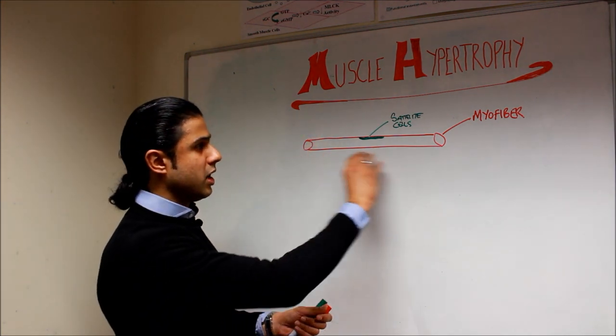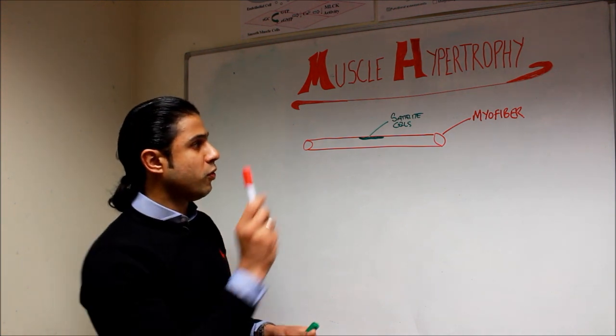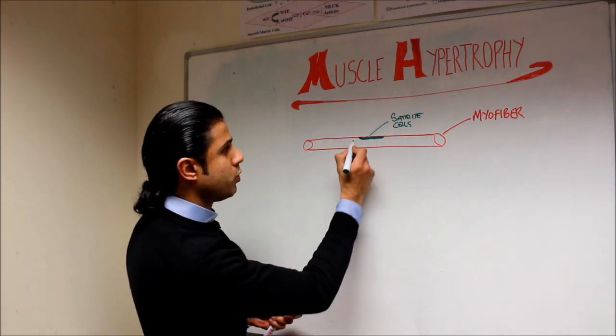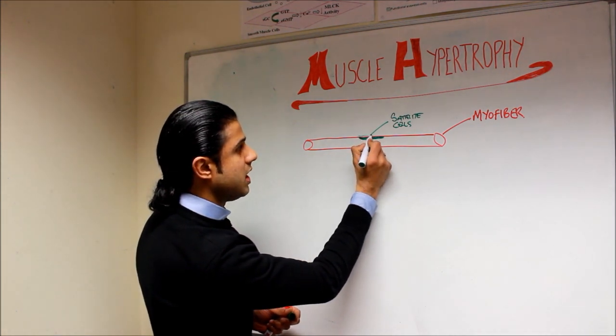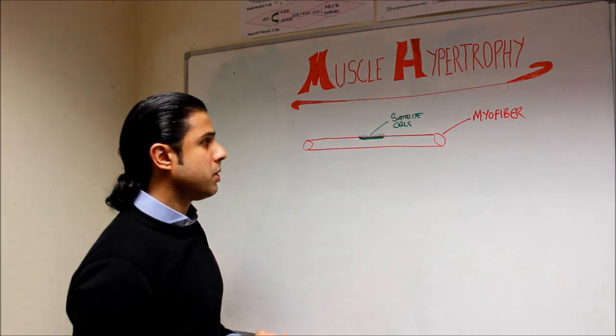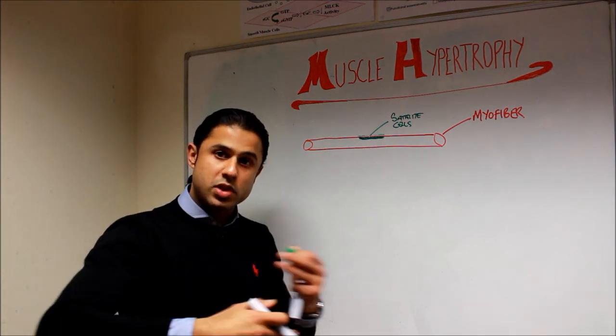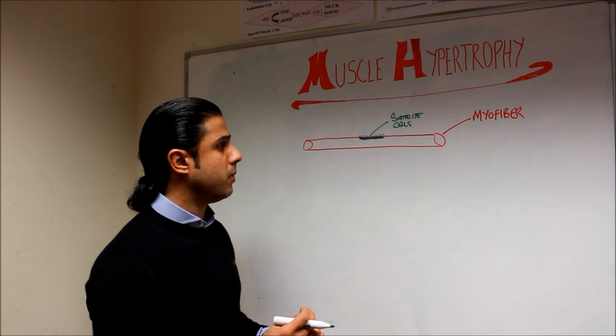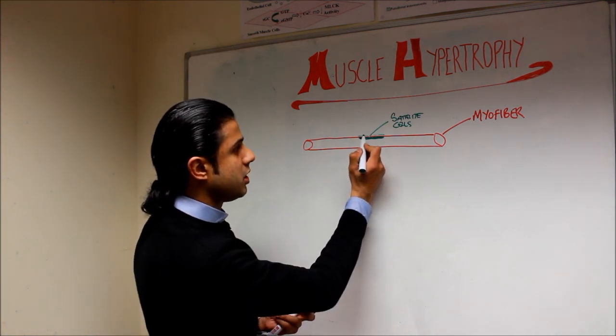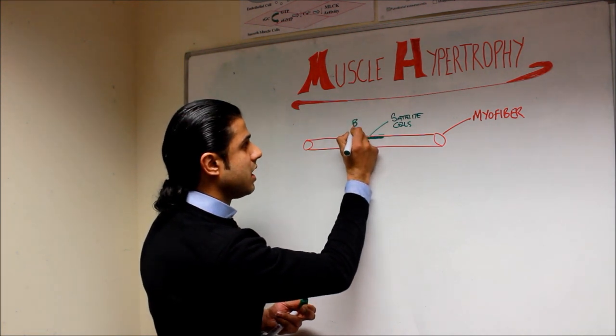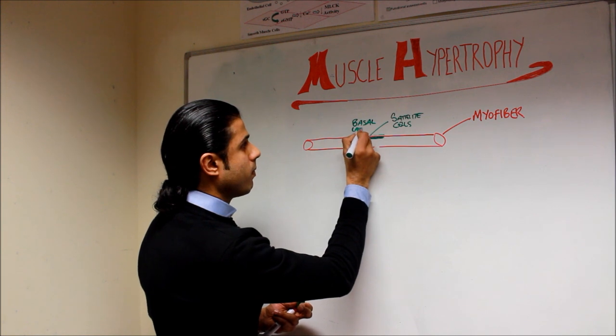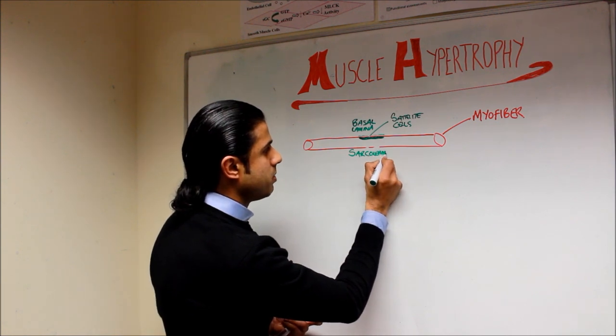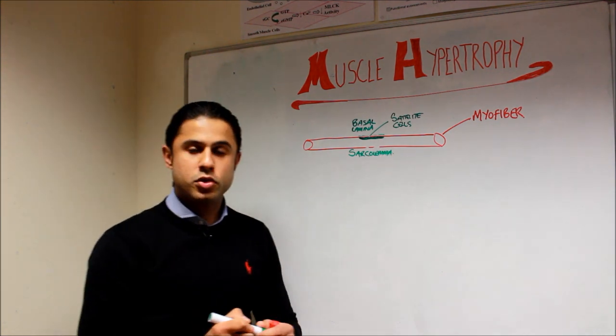We've got here a normal myofiber. We've also got something called satellite cells which are located between the basal lamina and the sarcolemma. The basal lamina would be just here, I'm going to draw this out here surrounding the actual muscle. Then you have the sarcolemma which encapsulates the entire muscle and transmits the electrical impulses to the T tubules to cause the release of calcium and muscle contraction. If you looked at a textbook you'll be able to see the position of these relative to the muscle fiber.